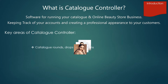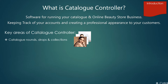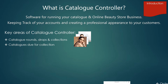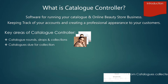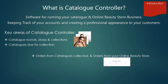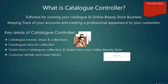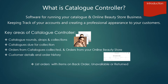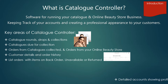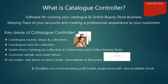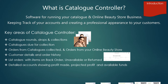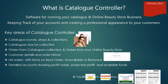The key areas of Catalogue Controller are catalogue rounds, catalogue drops and collections, customer orders from catalogues collected or from your website, customer details and order history, a record of items on backorder, unavailable items or returned items.